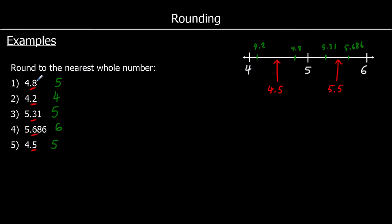So we had 4.8 — there was an 8 after the decimal point, it was 5 or above, so we rounded up. 4.2 — we've got a 2 after the decimal point, it wasn't 5 or above, so it stayed as 4. 5.31 — so 3 is the key number, it was not 5 or above, so it stayed at 5. 5.686 — 6 was our important number, it is 5 or above, so it rounded up from 5 to 6. And 4.5 had a 5 after the decimal point, so it is 5 or above, so it rounded up to 5.